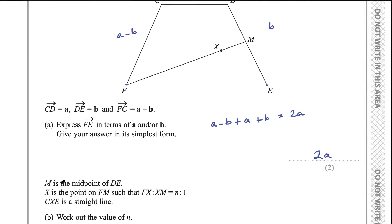Part B says M is the midpoint of DE. X is the point on FM such that FX to XM equals n to 1. CXE is a straight line, work out the value of n. Okay, so they tell us M is the midpoint of DE and CXE is a straight line. So that would be a line going through X to E. So I strongly encourage you to give this one a go before you continue watching. So please pause the video now if you want to give this a go.